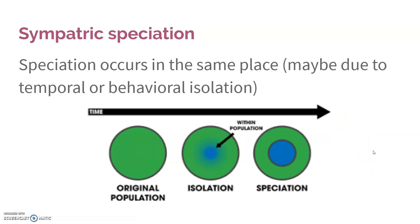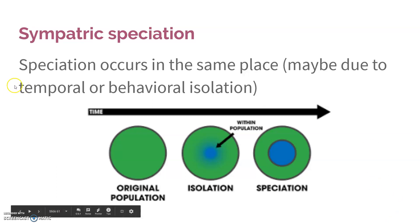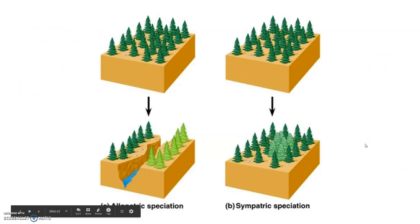Sympatric speciation occurs in the same place. Perhaps there's some sort of time difference — maybe they mate at different times, eat at different times, or are just awake at different times. That causes certain organisms to be out at certain times, and you end up with a group that, over time, doesn't associate with the other group anymore, resulting in a new species within the ancestral species. So: allopatric means two different places, geographically separated; sympatric is within the original population.